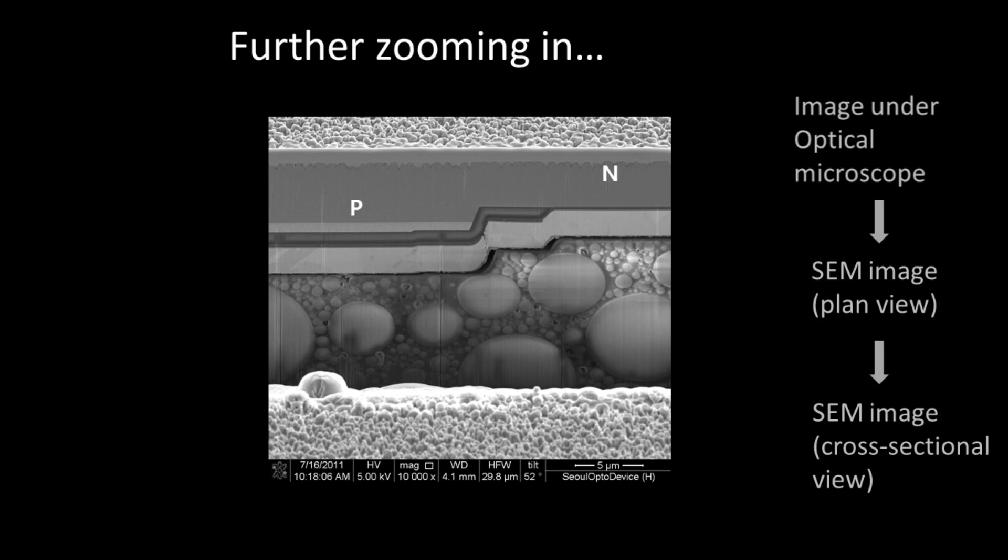that we describe as the P type and the N type, the injectors of the positive and negative charge carriers. The SEM has allowed us to zoom in so that the whole thickness of the LED is seen and that's about five microns thick, which is five one thousandths of a millimetre.